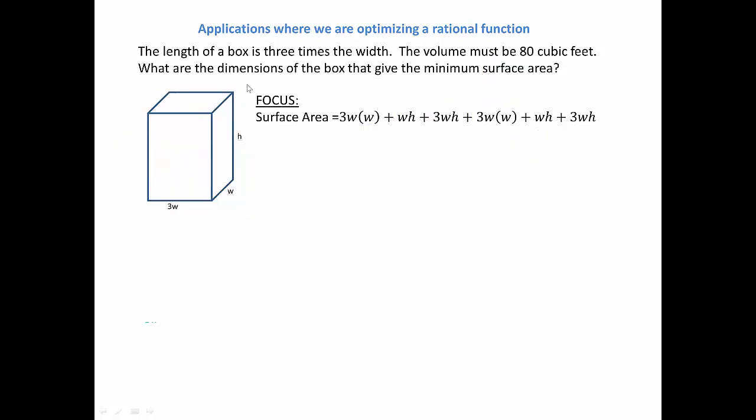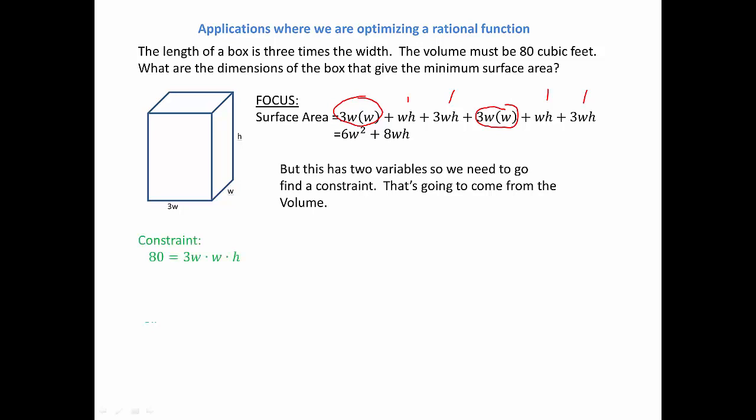And when we simplify all that, we will combine the 3W squared with the other 3W squared to get 6W squared. And then we have 3, 4, 5, 6, 7, 8WH. But this has two variables, so we need to find our constraint. And that's going to come from the volume. They tell us that the volume is 80 cubic feet. And volume is just length times width times height. So we end up with that formula in green. Solving for H, we get 80 over 3W squared.